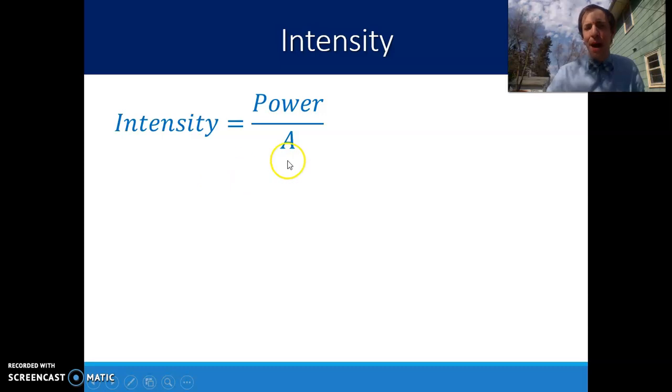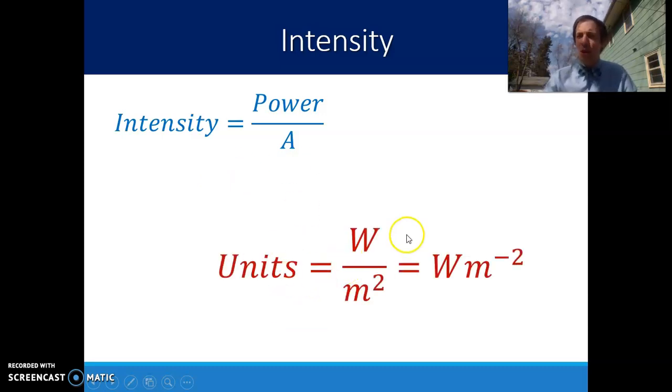So we're going to calculate this as power divided by area, which means our units are going to be the units of power, watts, divided by our units of area, meters squared. IB will typically present this as watts per square meter, or W m to the minus 2.